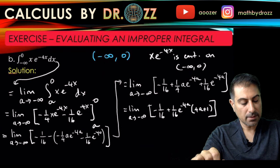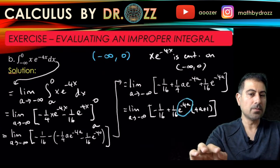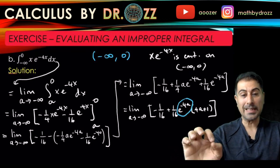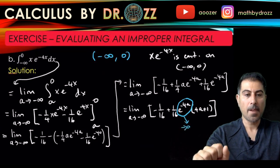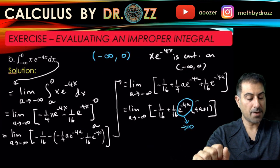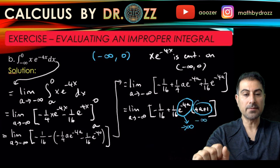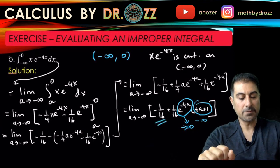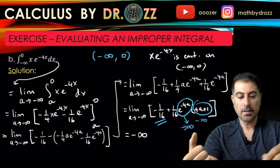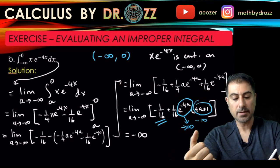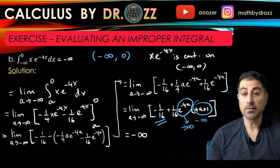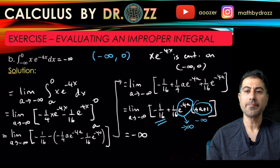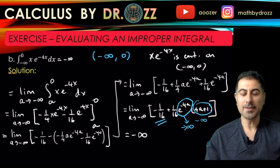Now we pass the limit as a → −∞. Look at the term e^(−4a): as a → −∞, −4a → +∞, so e^(−4a) → +∞. Combined with the (4a + 1) factor approaching −∞, we get +∞ times −∞, which is −∞. The constant term −(1/16) is negligible. Therefore the limit is −∞, meaning this improper integral is divergent. That concludes part b.